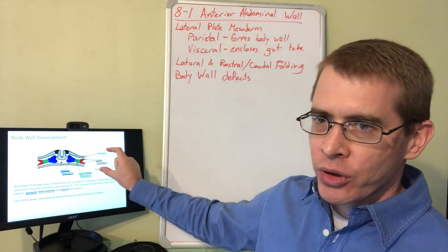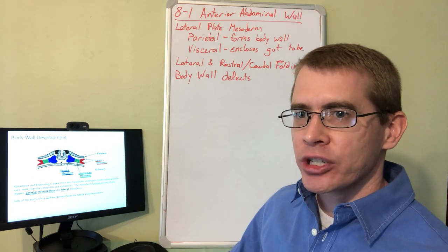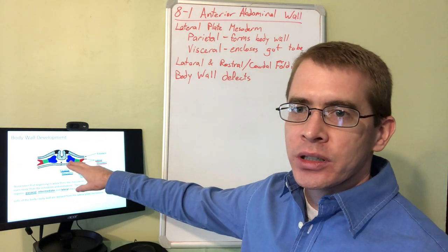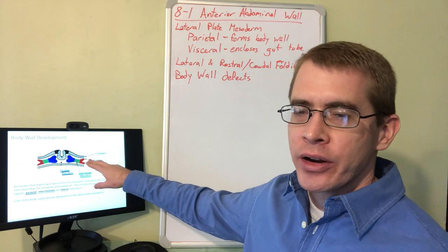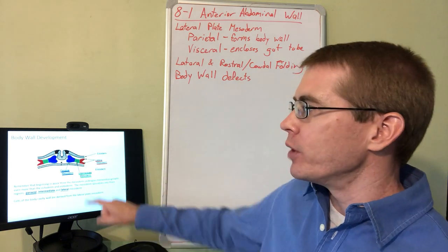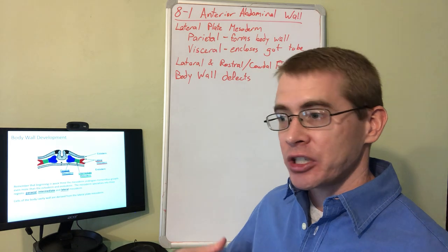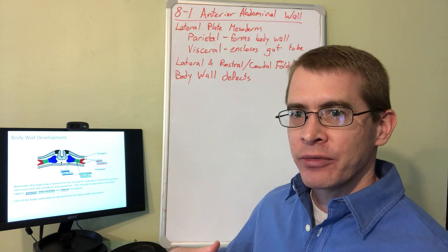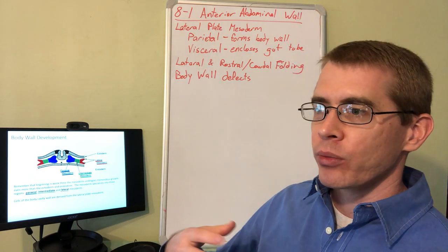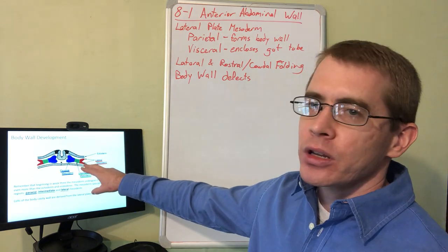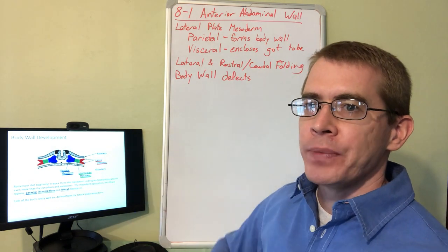You're familiar with this image after the process of gastrulation has occurred and you develop this in-between layer, the mesodermal layer. We've already talked about the paraxial mesoderm and how it forms the limb buds and the epaxial muscles of the back.